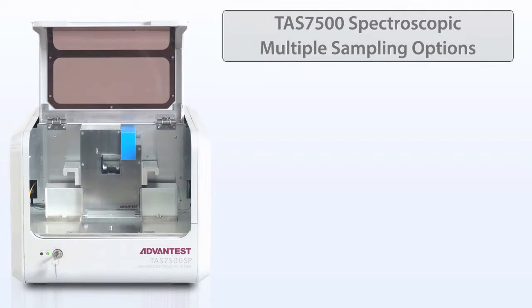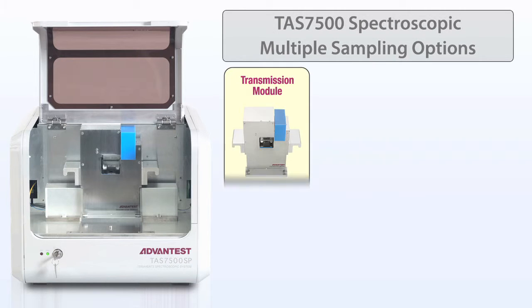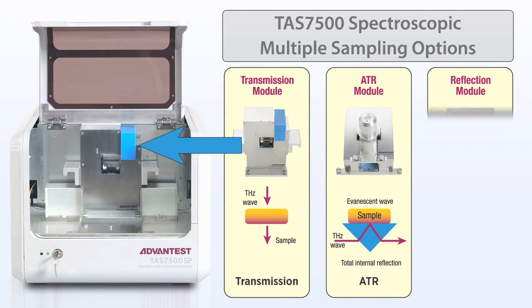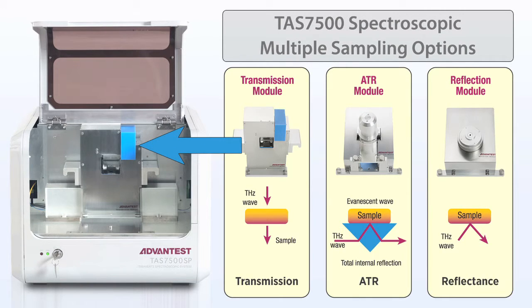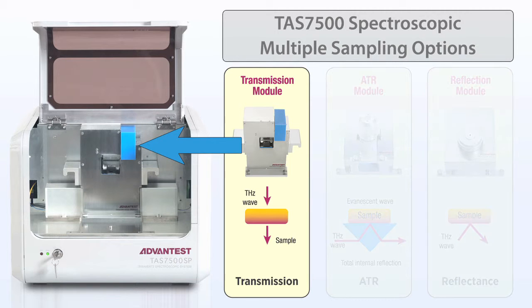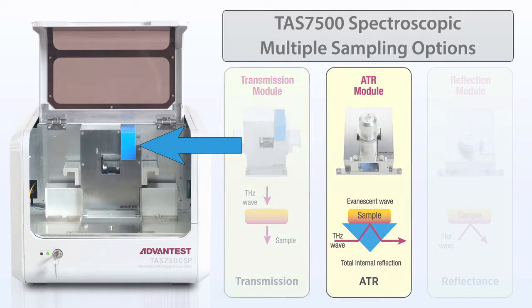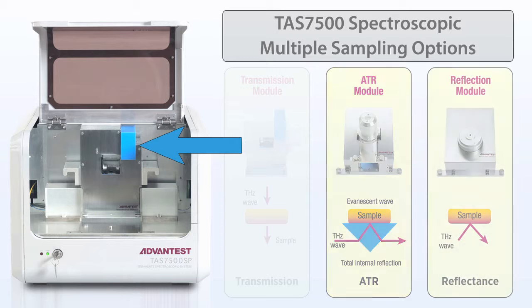The TAS7500 spectroscopy unit has multiple sampling options like those used for infrared, including transmission, attenuated total reflectance or ATR, and external reflectance.